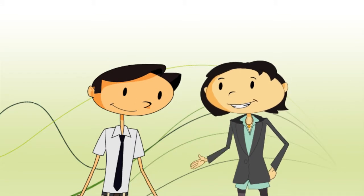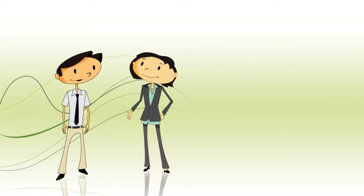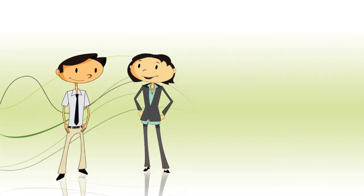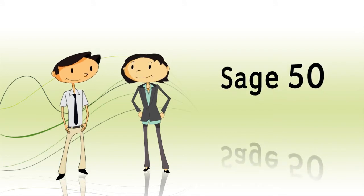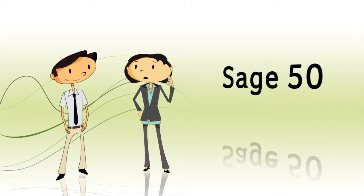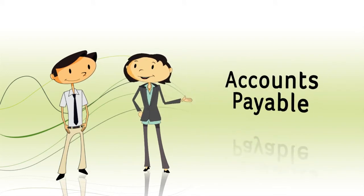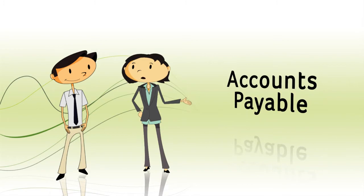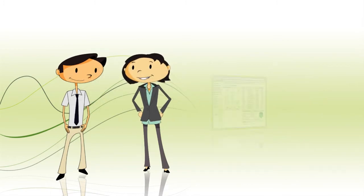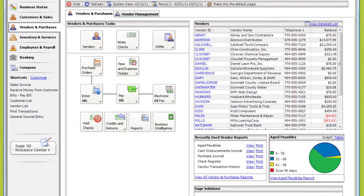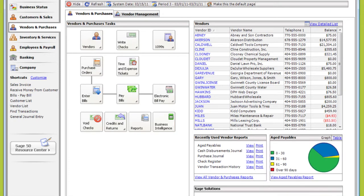Do you pay your bills through Sage 50? If you want peace of mind about cash flow, keep track of what you make and spend in Sage 50. When you track your bills or accounts payable, you can get reports that answer those questions. For example, the Aged Payables Report can show you exactly when bills are due, so you can keep cash in your business for as long as possible.